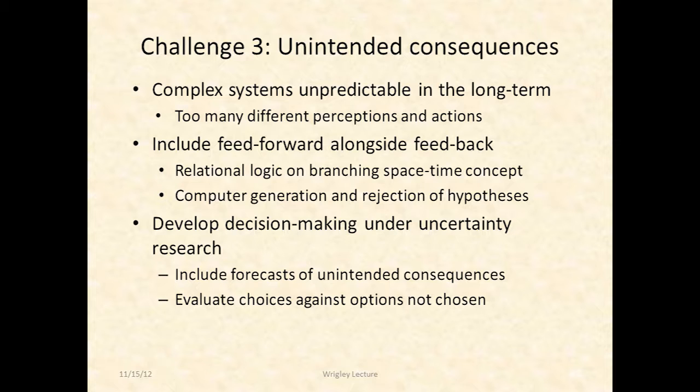Complex systems are unpredictable in the long term. We need to start looking at feed-forward and feedback together. We need to come up with a relational logic that actually does that — one person working on that in Europe is a man called Belknap. And finally, we need to look at decision-making under uncertainty in a different way — as a complex system by itself, with all the actors involved.